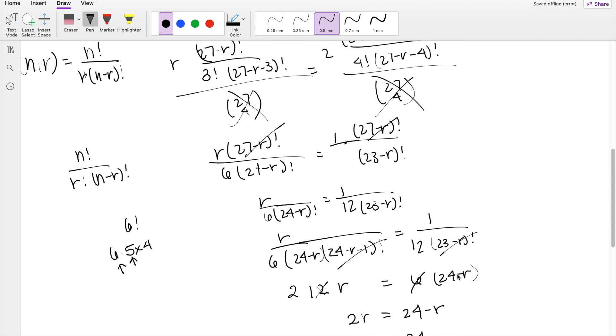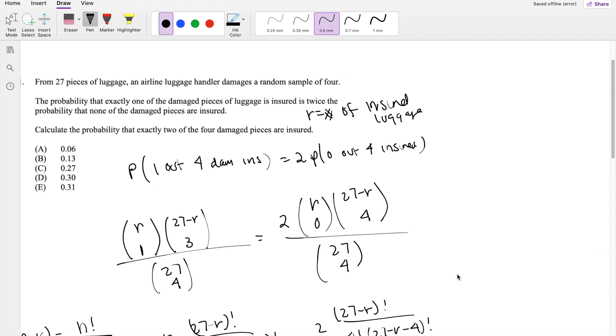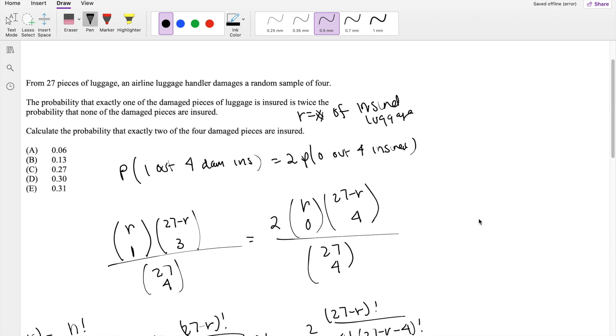Beautiful, R is equal to 8. And then because we know that, now we can find the probability that exactly 2 of the 4 damaged pieces are insured. So it's the exact same format, 27 choose 4. And instead of R, we can plug in 8. And out of 8, we're choosing 2. Out of 8 insured luggages, you're choosing 2 that are insured. And that means the number of uninsured luggages is 27 minus 8, which is 19, choose 2.